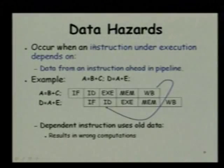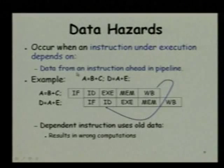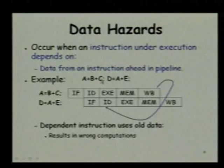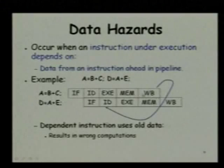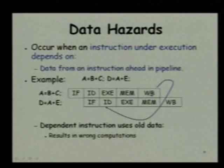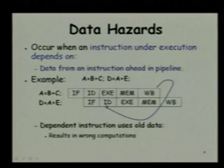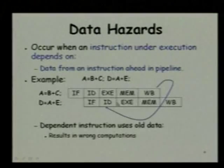Now let us look at data hazards. The data hazards occur when an instruction in execution depends on the data from another instruction that is ahead in the pipeline. For example, the instruction a = b + c defines a, and a is used in the second instruction b = a + c. In the MIPS pipeline, the register a would be produced only during the write back stage, whereas the operand a would be required in the ID stage. So if it tries to read the operand a, then it will get an old value, and as a result either we do something or we get an incorrect result. This is an example of a data hazard.